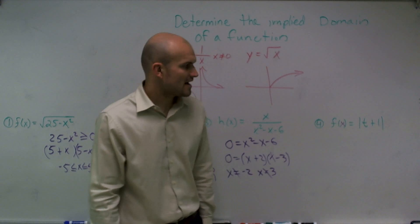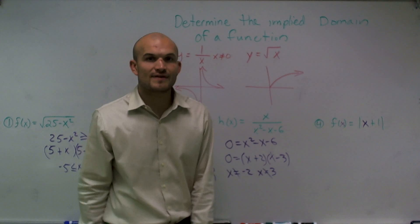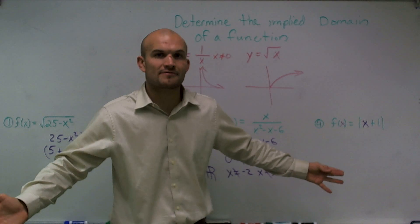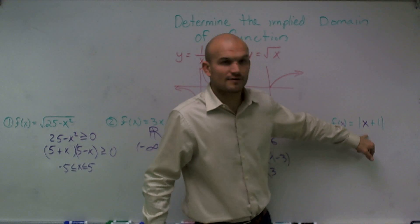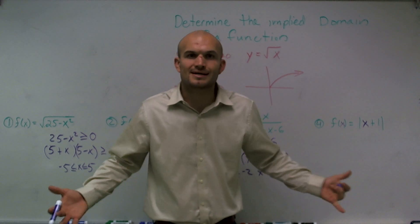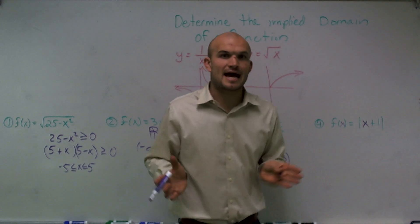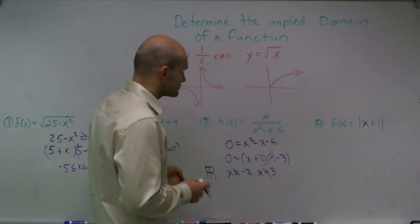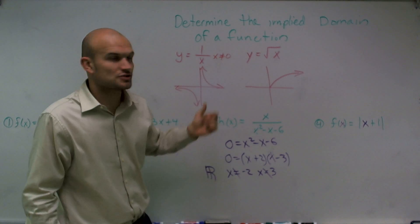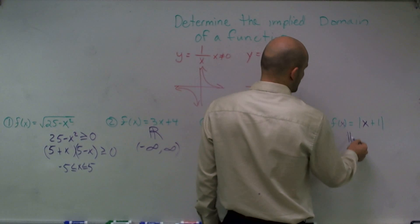For my last function, I have f of x equals the absolute value of x plus 1. Let's just look at this theoretically without even thinking about the graph. What number do I plug in for x — am I always going to get a value out for y? Yes, any time you plug in a number into this function, it's just going to add 1 and then take the absolute value of it. Therefore, it's not going to have a restriction like the square root, nor will it have a restriction like 1 over x. So therefore, this is all real numbers.